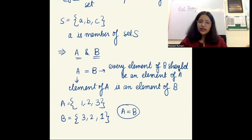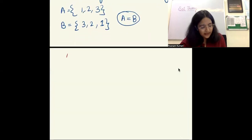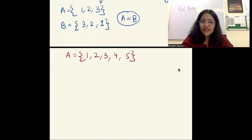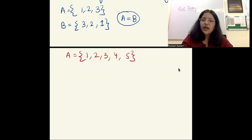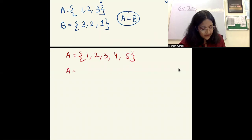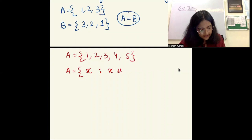We can represent sets in different ways. One way is to list all the objects — for example, A = {1, 2, 3, 4, 5}. But sometimes it's not possible to list all elements, so instead we specify the property of the set. For example, if I want the set of natural numbers, I write: A = {x | x is a natural number}. Here x is the typical member and we write the defining property that x must satisfy to be part of that set.